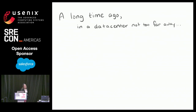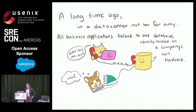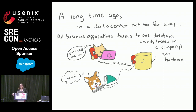So how did this all happen? Story time. A long time ago, in a data center not too far away, all business applications talked to one database, hosted on the company's own hardware usually — probably that database lived on a server in a basement or some windowless server room.